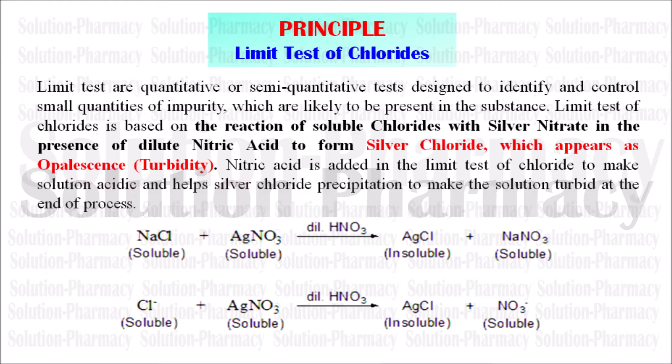In the limit test, the turbidity, color, stain, or opalescence produced by the reaction of impurities present in the test sample with the reagent is compared with the standard turbidity, color, stain, or opalescence produced by the reaction of a known amount of impurities (the standard) with the same reagent.